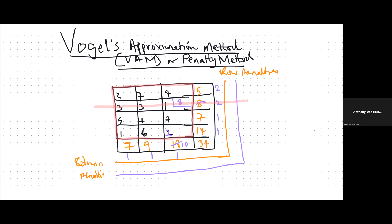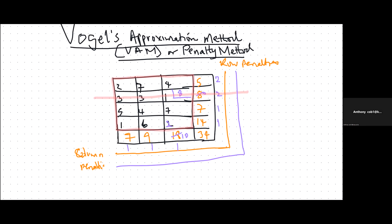Some of the penalties will change and others will not, but to be safe just revise all of them. In row one the penalties have not changed, still two — that's four minus two. Row two has been deleted, so we skip it. Row three has no change. For the columns, we may find changes since we interfered with the rows. Column one: minimum undeleted cost is one followed by two, penalty unchanged at one. Column two: smallest undeleted value is four followed by six, so the penalty is now two. Column three: smallest undeleted cost is two followed by four, giving a difference of two.